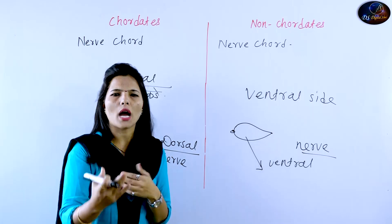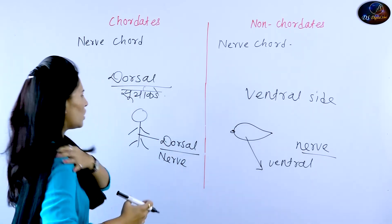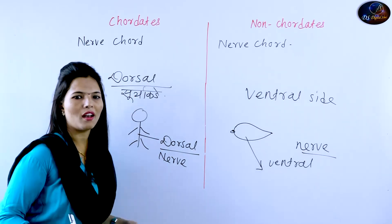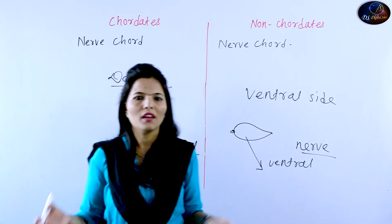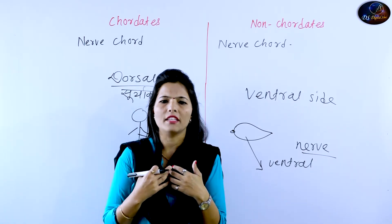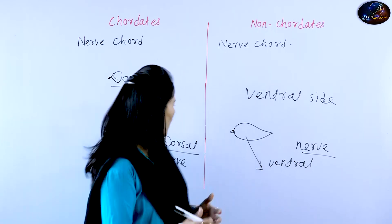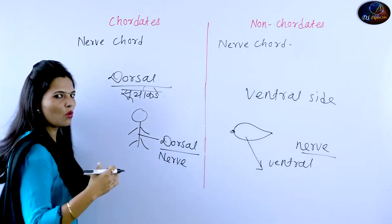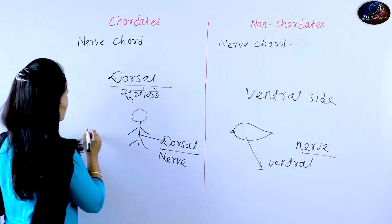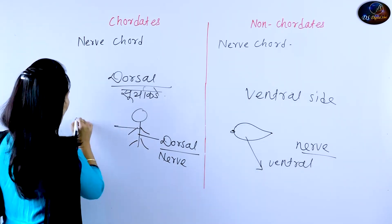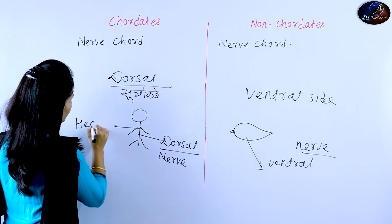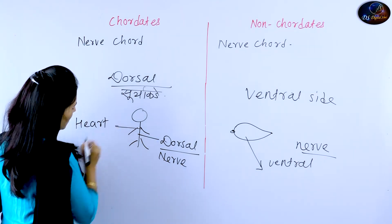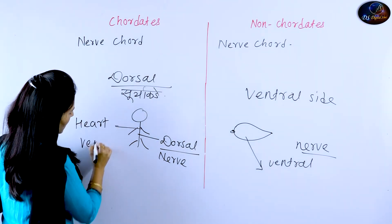That means the heart side is called the ventral side. The heart is towards the ventral side in chordates.